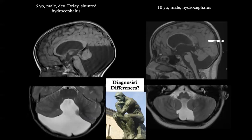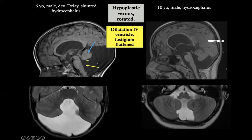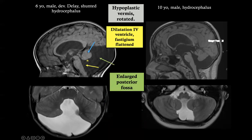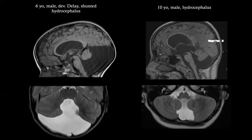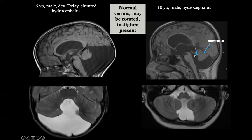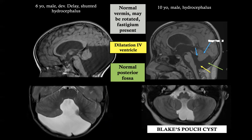The first case has a hypoplastic vermis, dilatation of the fourth ventricle, a flattened fastidium, and a very large posterior fossa with associated hydrocephalus — this is the definition of Dandy-Walker malformation. The second case, with enlargement of the posterior fossa, rotation of the vermis, but an acute fastidium angle and more-or-less normal posterior fossa size, is a Blake Pouch cyst. The key difference between the two is the fastidium and the presence of an abnormal vermis.